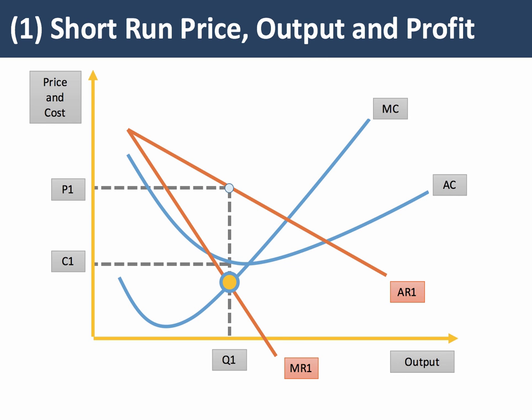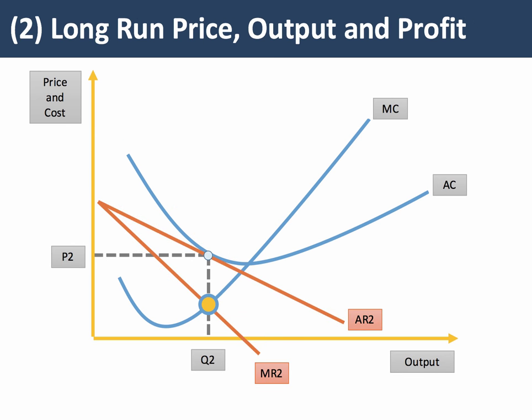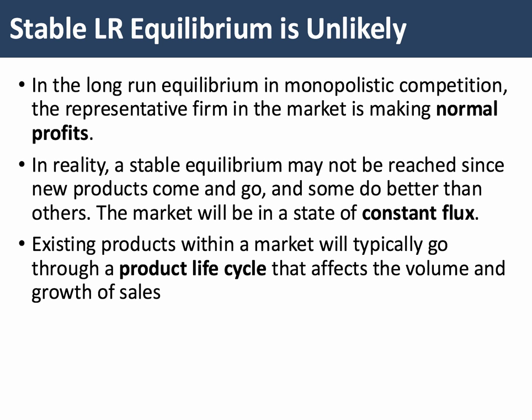Let's see how this works by going back to our short-run price and output profit maximisation at Q1 and P1. If new firms come in and take away some of that demand, demand will shift to the left and may also become more elastic because there are more close competitors and close substitutes in the industry. This gives us the long-run equilibrium diagram: at output Q2, the profit-maximising output, price P2 is just equal to the unit cost of supply, so this firm is making normal profit. In the long run, therefore, firms in this market will make normal profit.